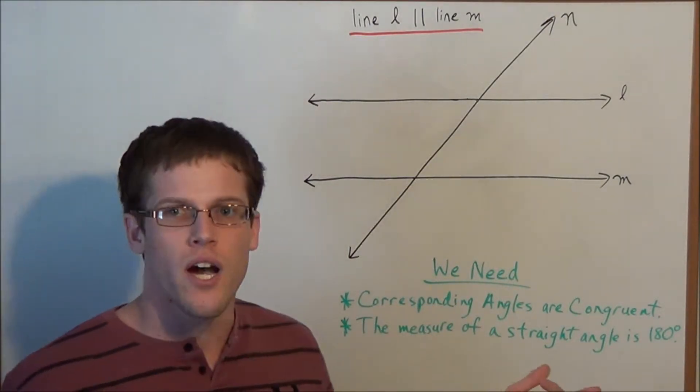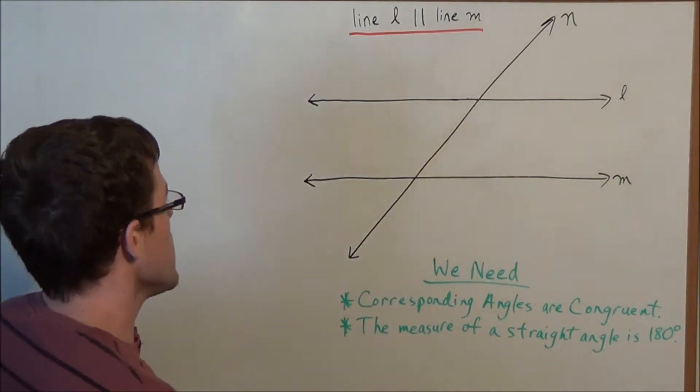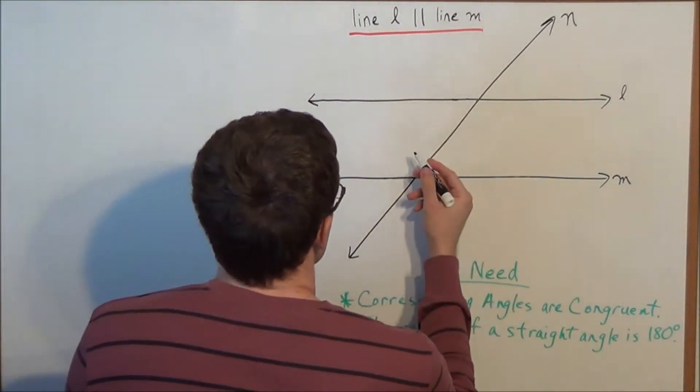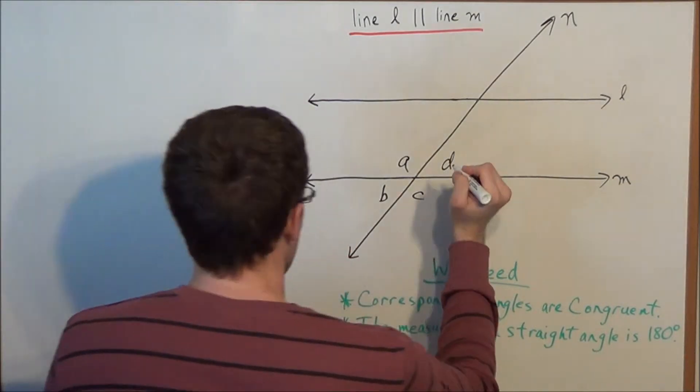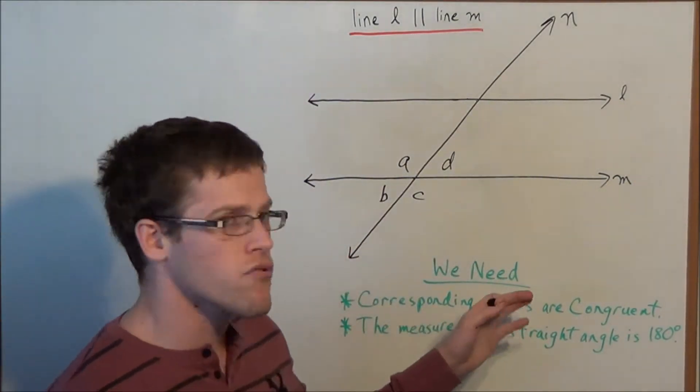We have corresponding angles are congruent. And what this means is, if I define these four angles to be A, B, C, and D, corresponding angles are congruent.